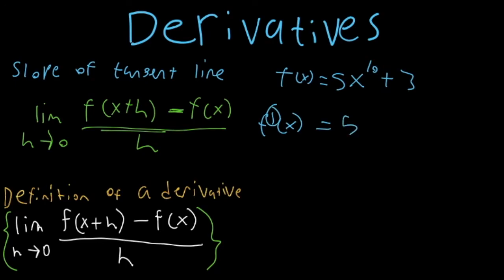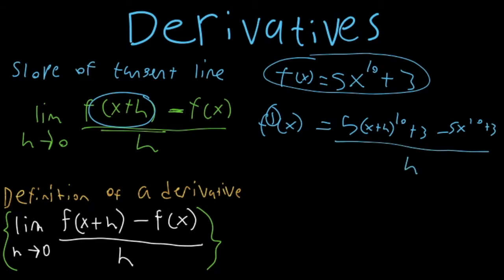We're going to take this 5 and we're going to plug in this value for x first. This is going to be x plus h to the 10th power plus 3 minus, and then we would have minus our entire function. So minus 5x to the 10th plus 3 all over h. Well, now we've got a huge problem because of this value right here.